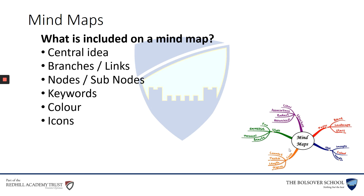Icons — if you think they're relevant, use them. Topics — as you can see around the example in the bottom right corner, you've got structure, you've got style. So what is each branch all about? And if you wish, you can also include small images. Don't go too over the top with them — keep them straightforward and simple.